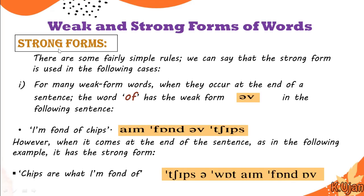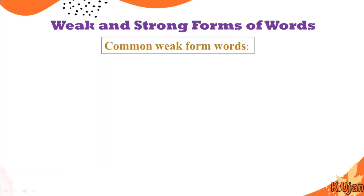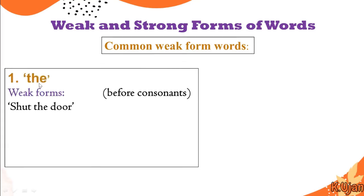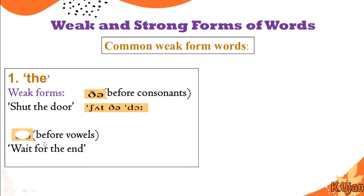So the rule for using strong forms: mostly when words come at the end of a sentence, we use the strong form; when they are used within a sentence, we mostly use weak forms, as in 'of.' Now let's talk about common weak forms. The word 'the' has the weak form /ðə/ before consonants, as in 'shut the door,' and /ði/ before vowels. These are the short forms of the word 'the' — 'shut the door' — we don't say 'the door,' we say 'shut the door.'